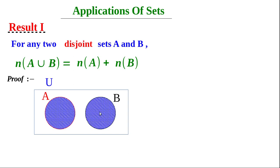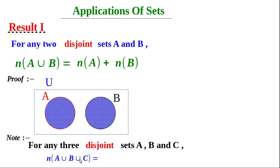Suppose there are three sets A, B, and C, and these three sets are disjoint. Then what will be n(A∪B∪C)? Very simple — n(A∪B∪C) = n(A) + n(B) + n(C). But one condition is that the three sets must be disjoint.